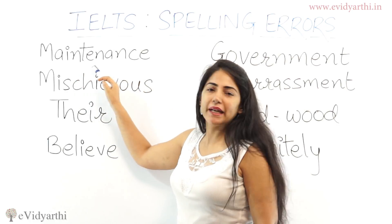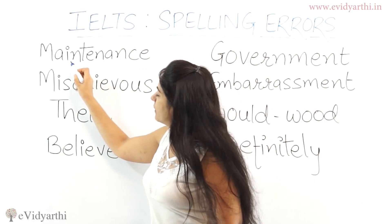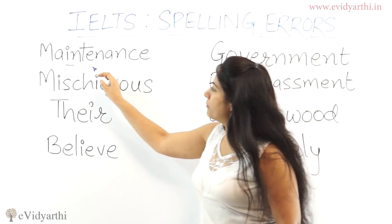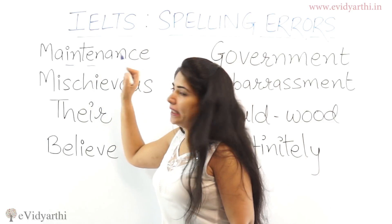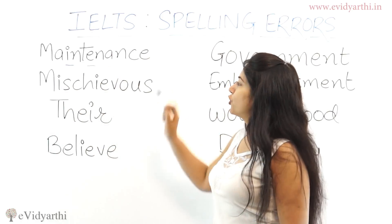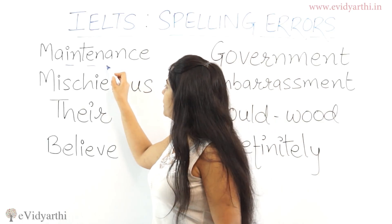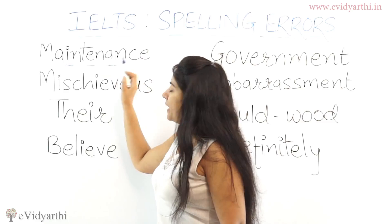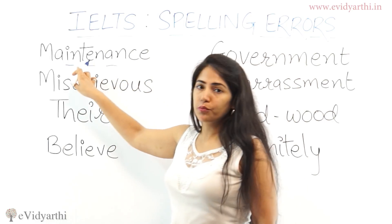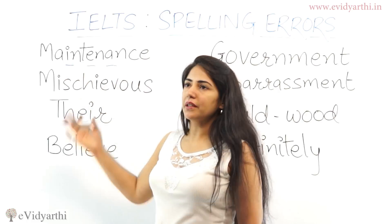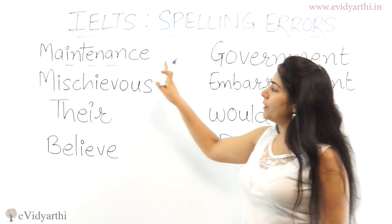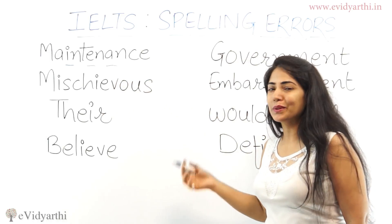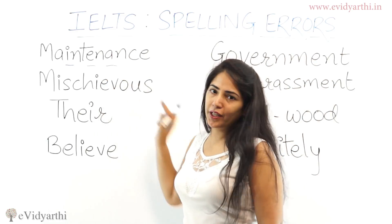The first word is 'maintenance.' Students get confused and forget to write the 'I.' The second mistake is that people write 'A' where it's incorrect. The third mistake is that people use 'E' instead of 'A' in this word. So in 'maintenance,' be careful about whether to use I, E, or A in the correct positions.